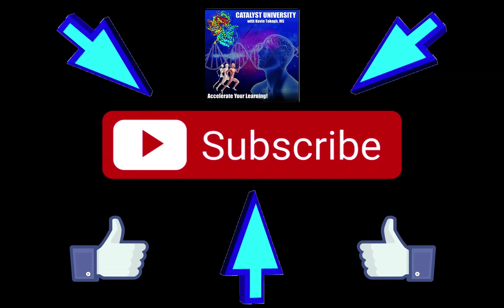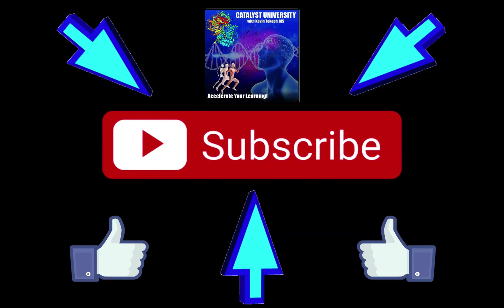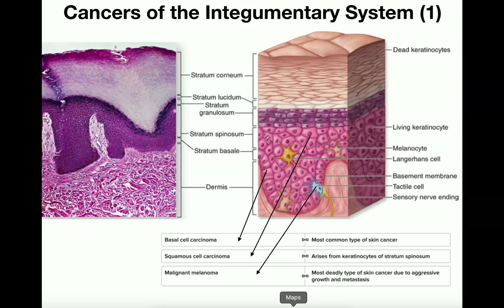Welcome back to Catalyst University. My name is Kevin Tokoth. Please make sure to like this video and subscribe to my channel for future videos and notifications. In this video, we're going to discuss three major cancer types of the integumentary system, talk about their effects and what layers they correspond to in the epidermis.